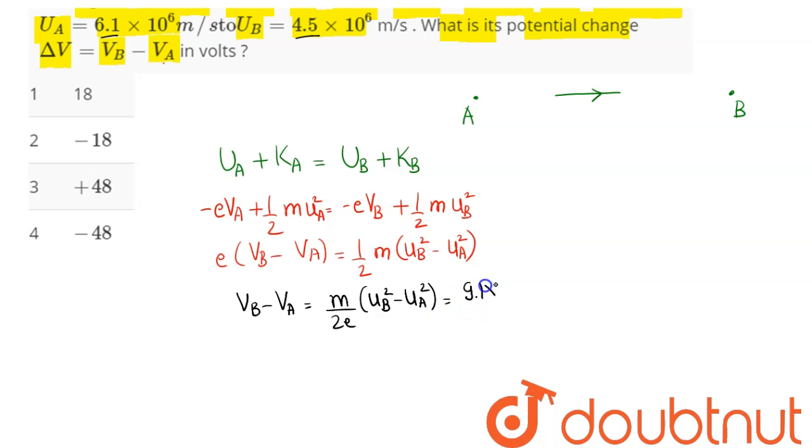Now, mass of electron here is 9.1 × 10^-31 kg divided by 2 times charge on electron, 1.6 × 10^-19 coulomb. Ub here is 4.5² minus ua here is 6.1², and taking 10^12 outside.